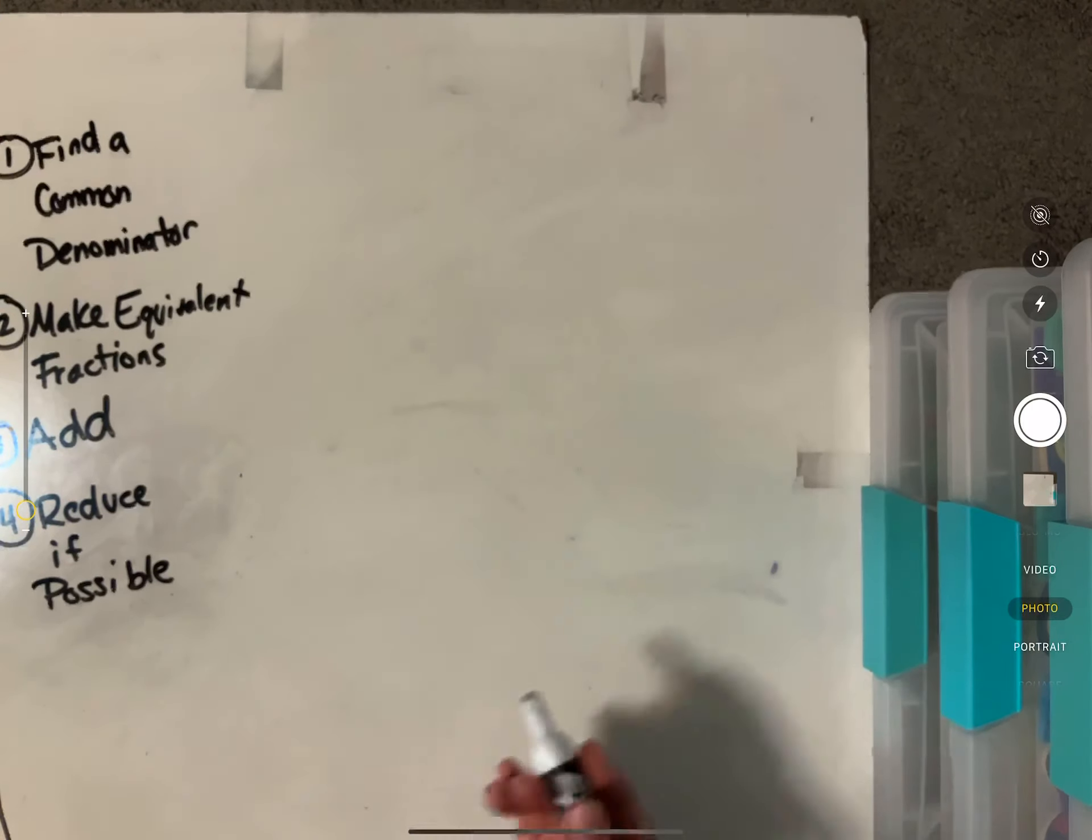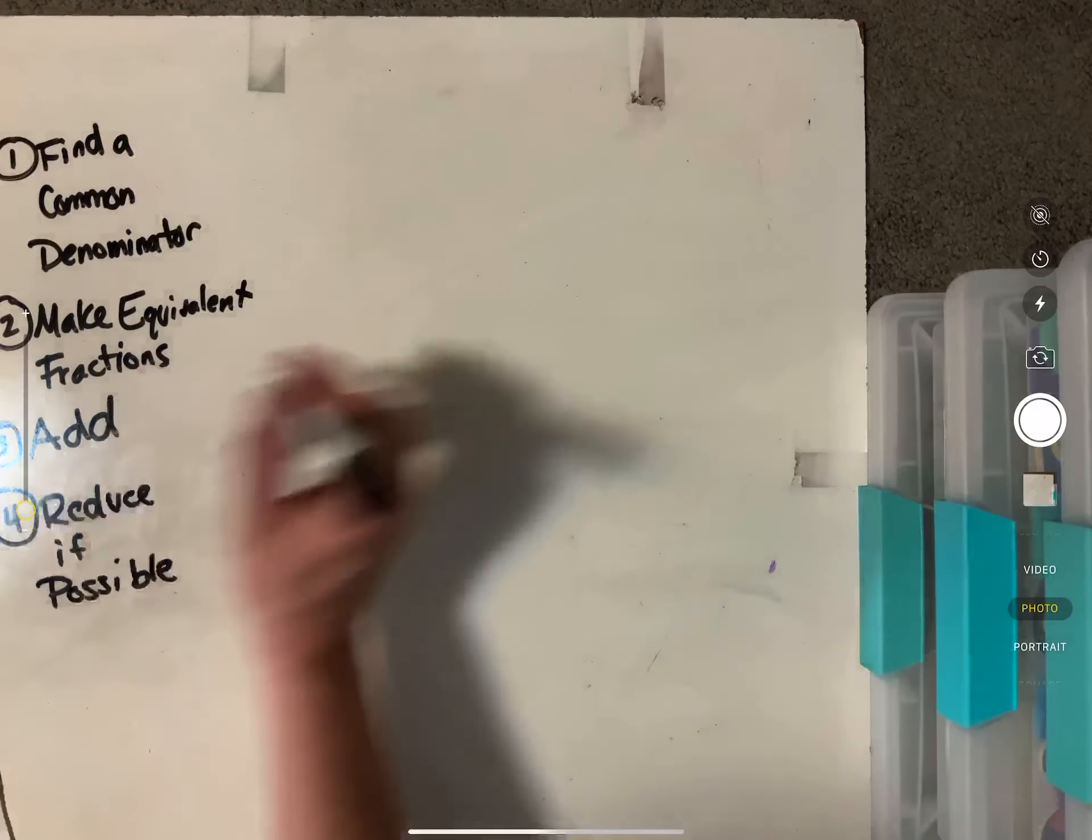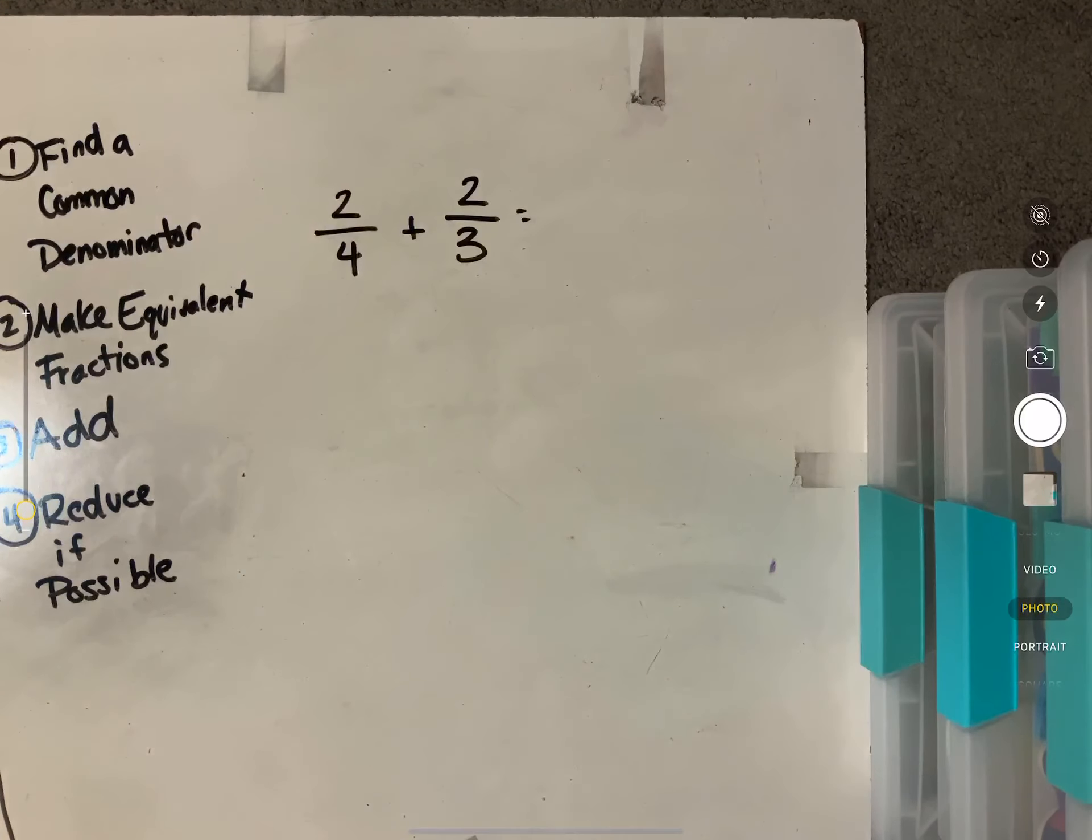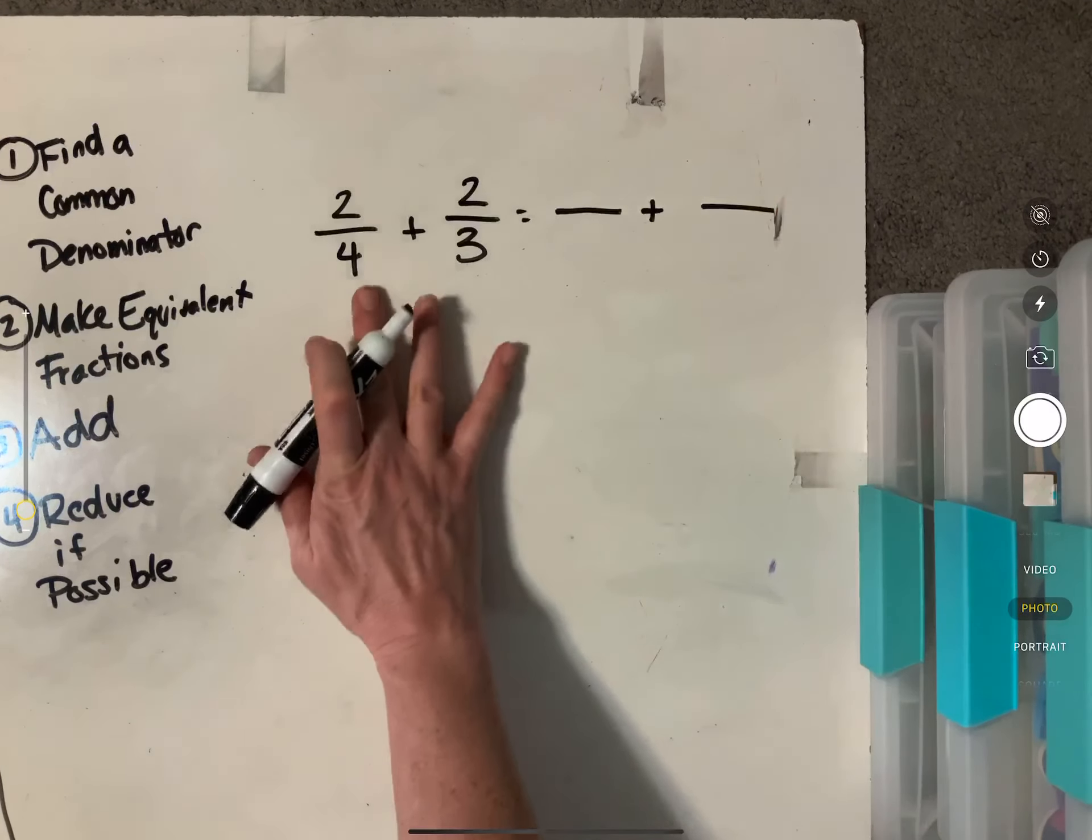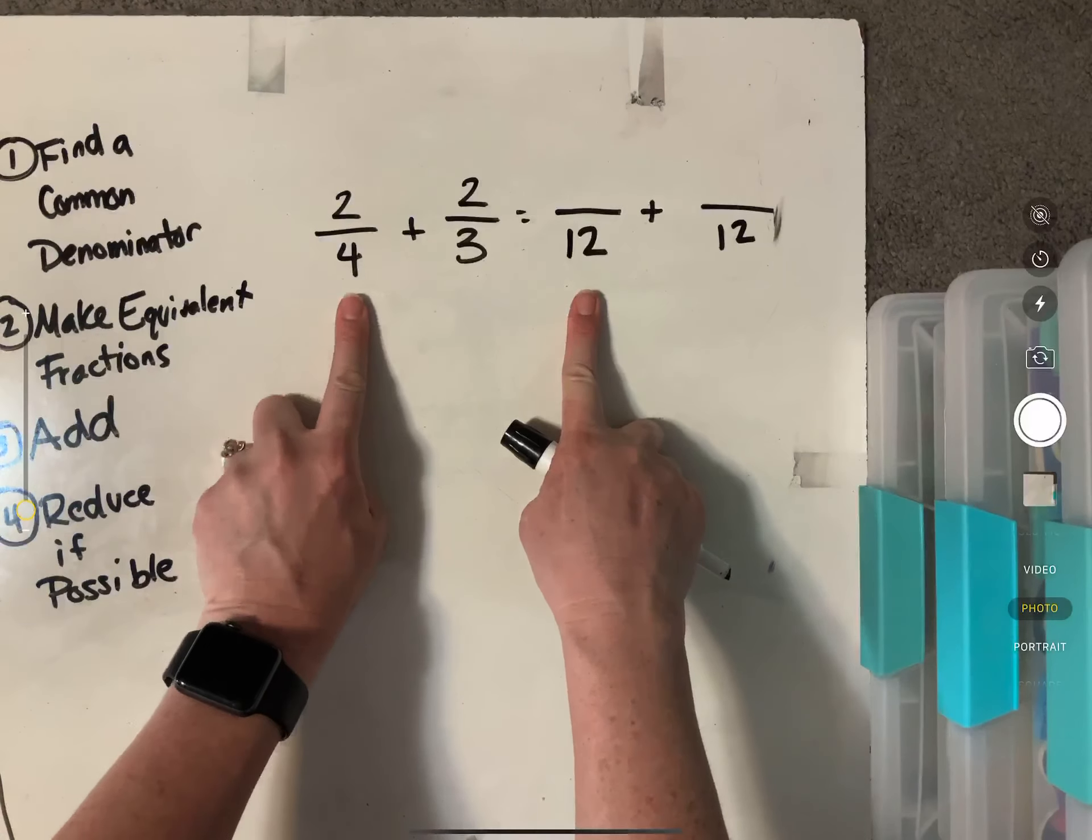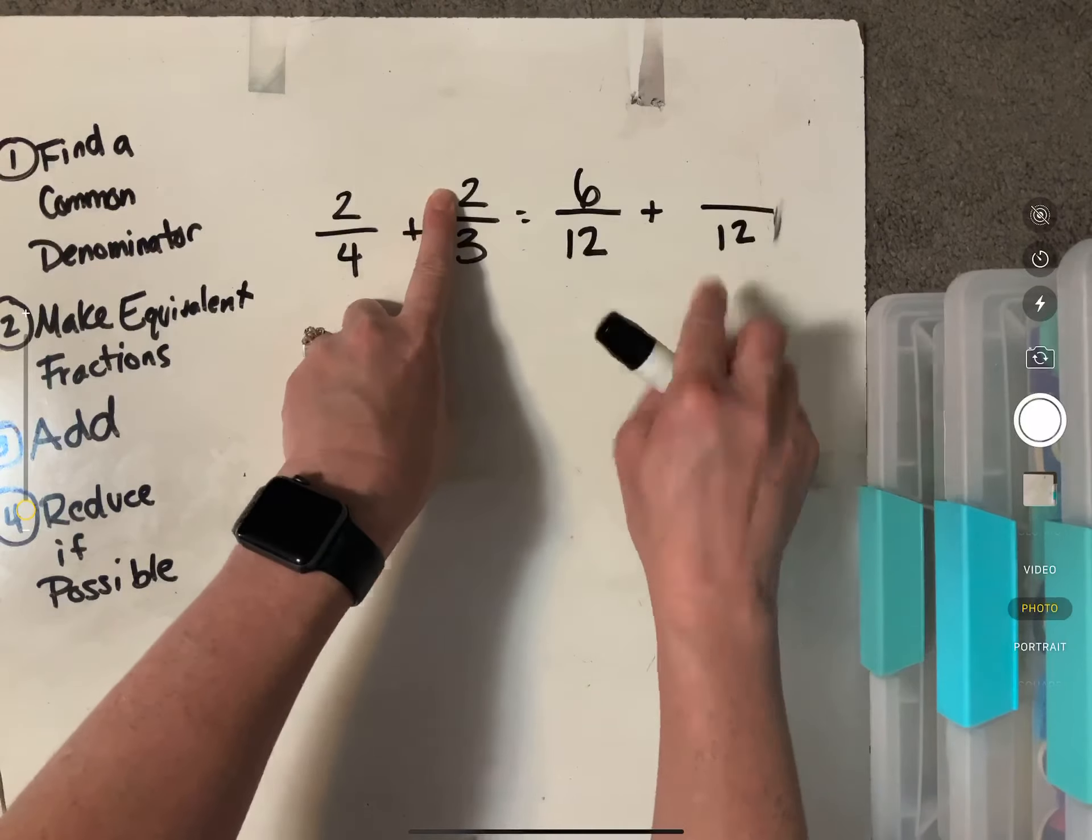Let's do two fourths plus two thirds. Okay. So our first step is we have to find our common denominator. So four and three, our lowest common denominator here is going to be 12. So 12 for both of them. And then four times three would be 12. Two times three is six. Three times four is 12. So two times four is eight.